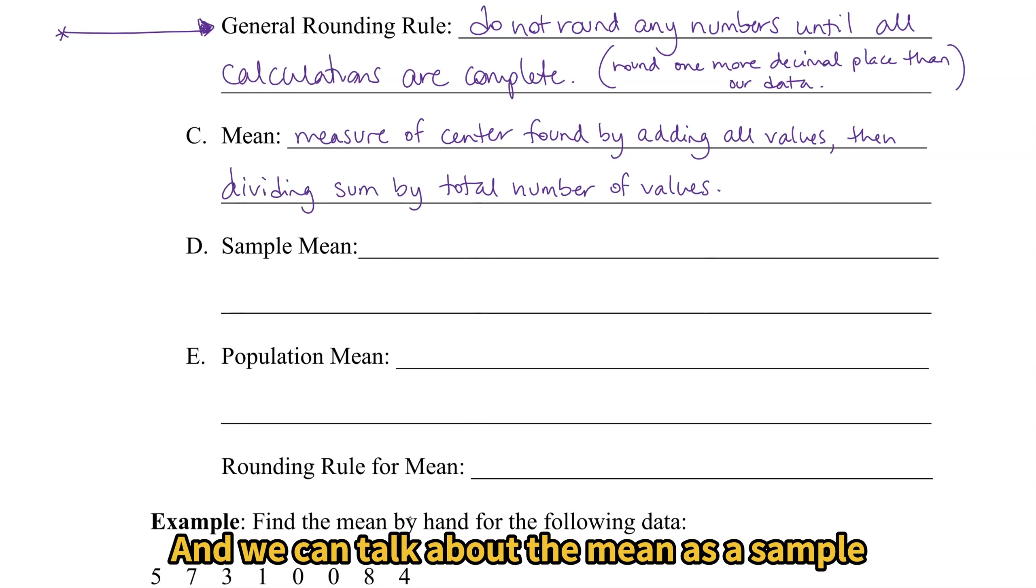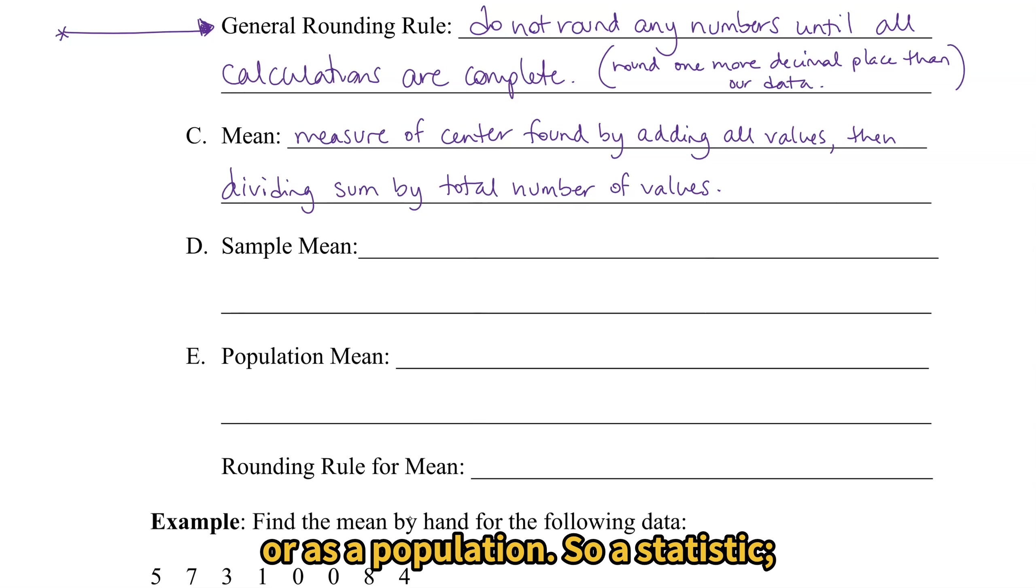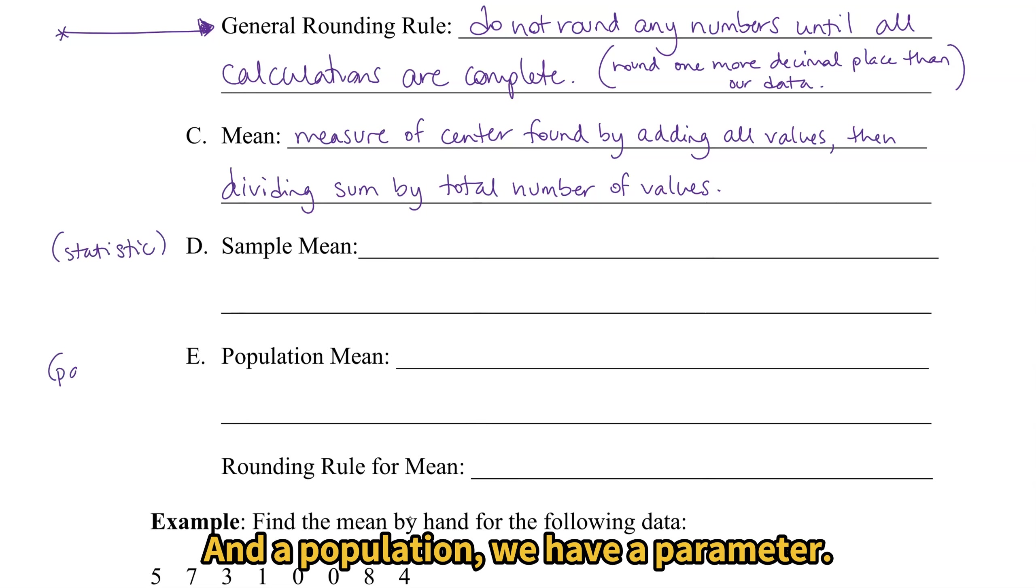And we can talk about the mean as a sample or as a population. So a statistic, since it's a sample mean, we have a statistic here, and a population, we have a parameter.